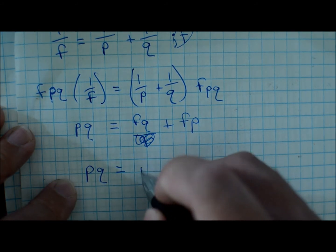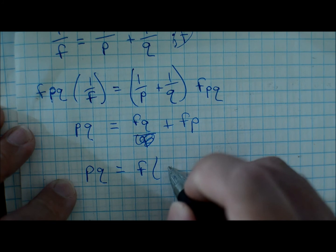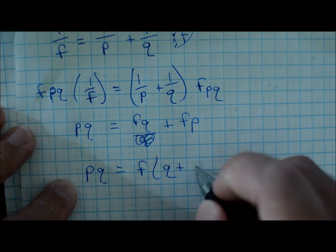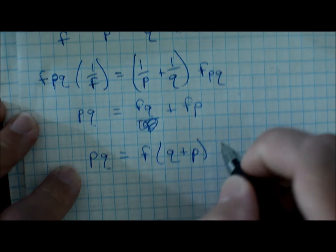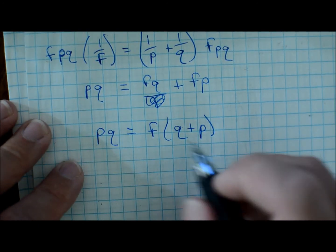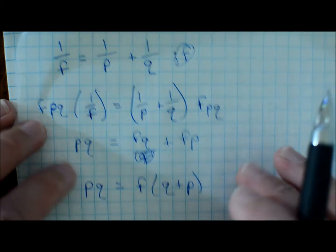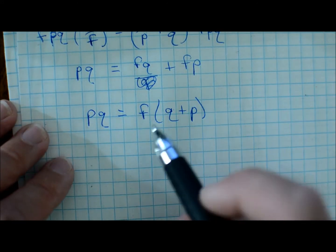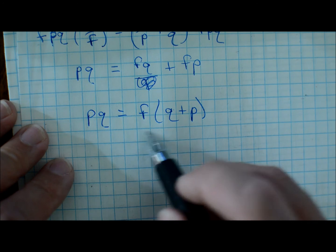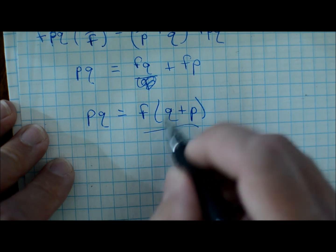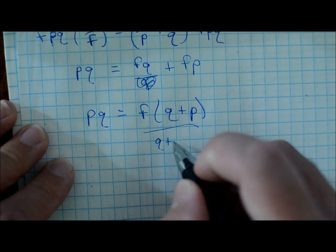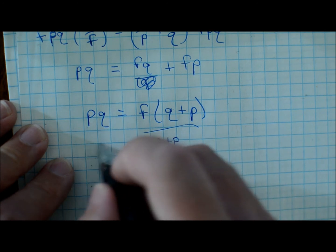get PQ is equal to F times (Q plus P). Now we're looking for F, solving in respect to F, so of course the easiest way to do that is to divide both sides by (Q plus P).